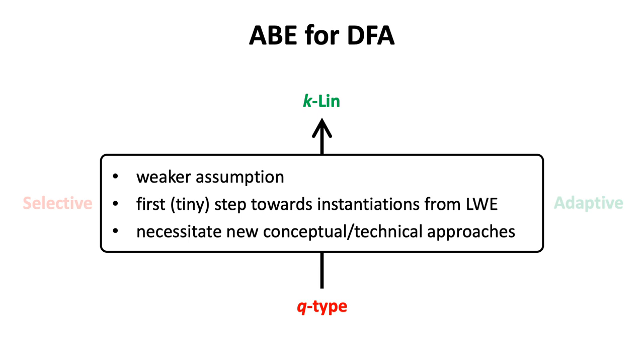Finally, the k-linear assumption is much less complex than the q-type assumption. Typically, it becomes quite challenging when we construct a reduction using the k-linear assumption instead of the q-type assumption. And new conceptual approaches are required in this case.